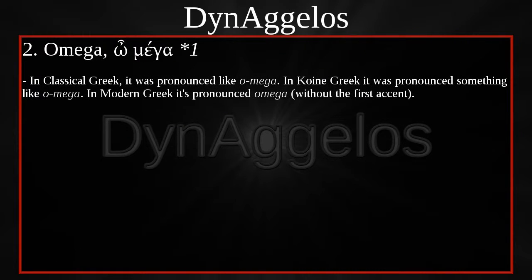OMEGA — in classical Greek it was pronounced O-MEGA. In Koine Greek it was pronounced something like O-MEGA. In modern Greek it's pronounced O-MEGA, without the first accent. Notice that it's hard to accent O-MEGA with its two accents, which is probably why the first accent was removed in modern Greek. In classical Greek it would be easier to hear both accents because of the way words were accented. More on this ancient accent system later.